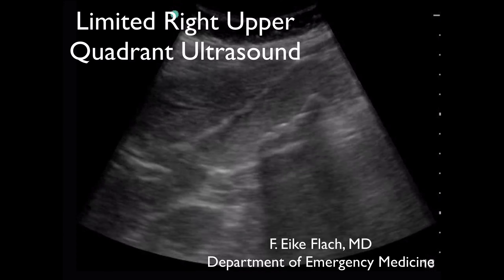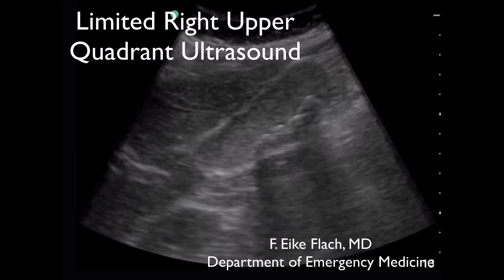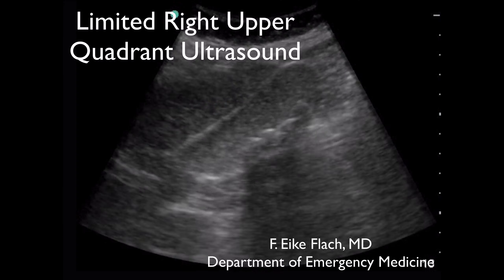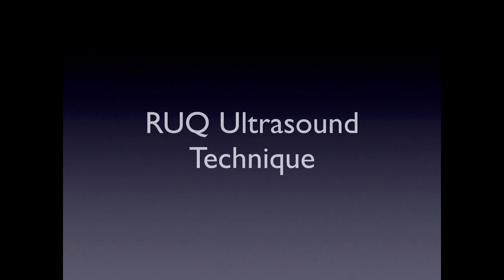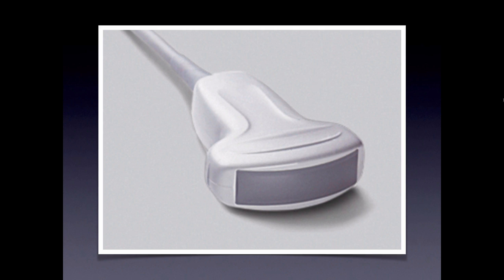Welcome back for your introductory right upper quadrant ultrasound lecture. First we'll cover basic technique. For all abdominal imaging, you can use the curvilinear transducer with the advantage of its higher resolution, which is why it's often used as the go-to transducer for abdominal imaging, and even casually referred to as the abdominal probe.